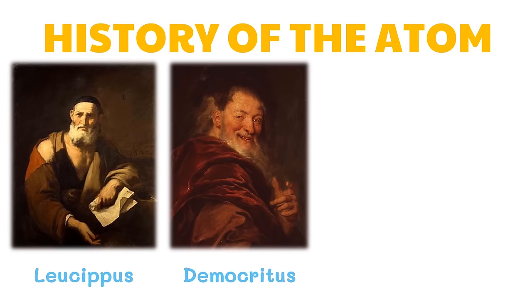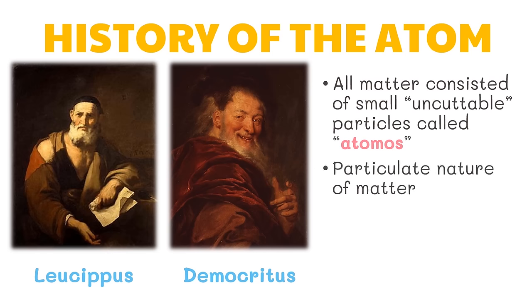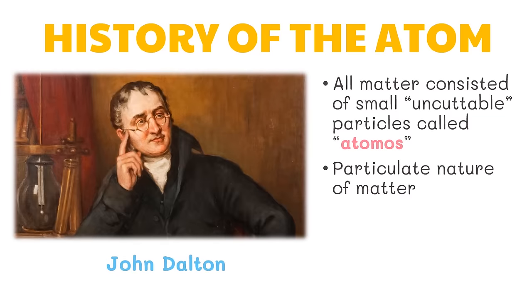Who figured out that all matter is composed of tiny particles called atoms? It was the Greek philosophers Leucippus and Democritus at about the 5th century BC who had the idea that all matter consisted of small, uncuttable particles called atomos, which later came to be known as atoms. All forms of matter are made up of tiny particles in constant random motion — scientists call this the particulate nature of matter. After more than 2,000 years, this ancient idea became a theory when John Dalton put together many observations and results of experiments and formulated the atomic theory.